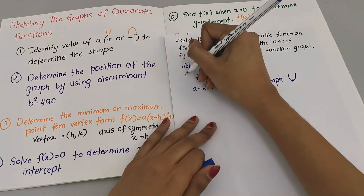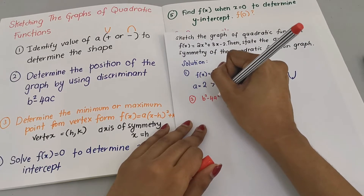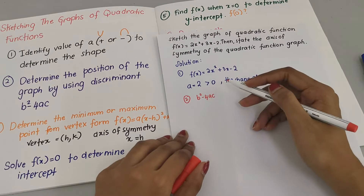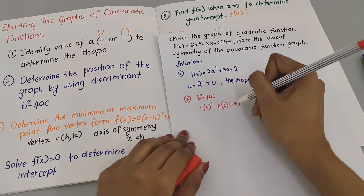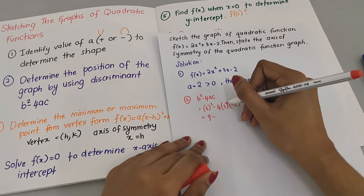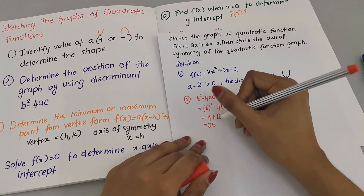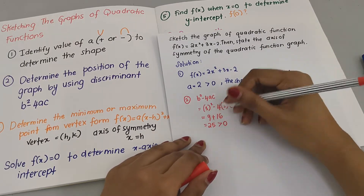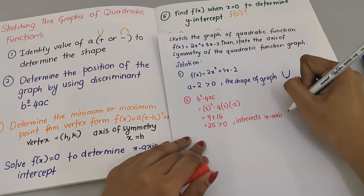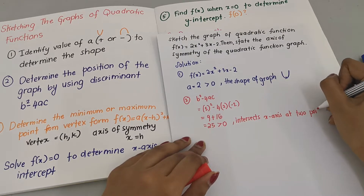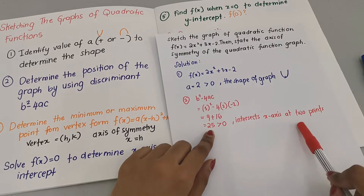Now Step 2: determine the position using the discriminant, b² − 4ac. Let's substitute all the values. b is 3, so we get 3² − 4(2)(−2), which gives us 9 + 16 = 25. Since 25 is greater than 0, this graph intersects the x-axis at 2 points. If you still don't understand this, please go back to my other video on how the position of the graph works, because this is very important.